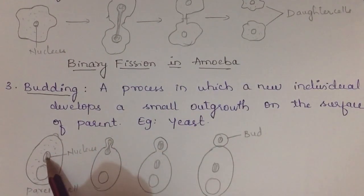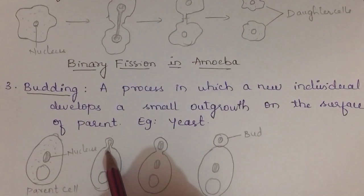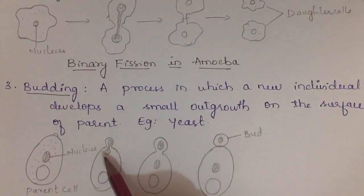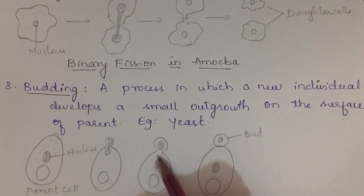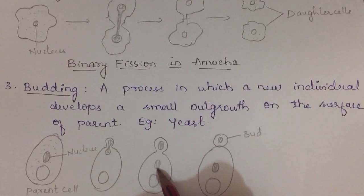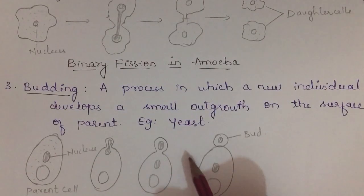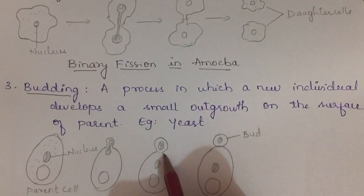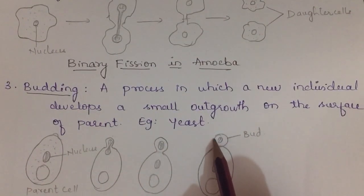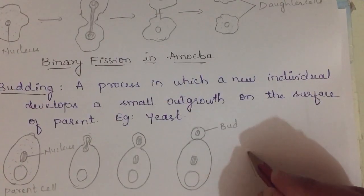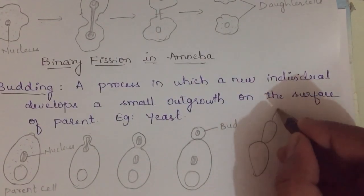The nucleus moves toward the outgrowth and karyokinesis takes place — the nucleus divides. One nucleus moves into the outgrowth and another remains in the parental cell. Then cytokinesis occurs: the cytoplasm divides, forming a small bud that separates from the parental cell.